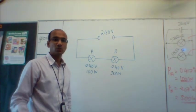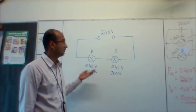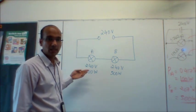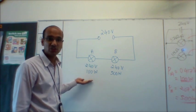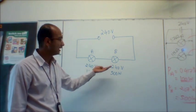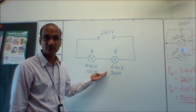What we have in this question is a simple series circuit with a power supply of EMF 240V and two bulbs. Bulb A has a rating of 240V and 100W. Bulb B has a rating of 240V and 500W.